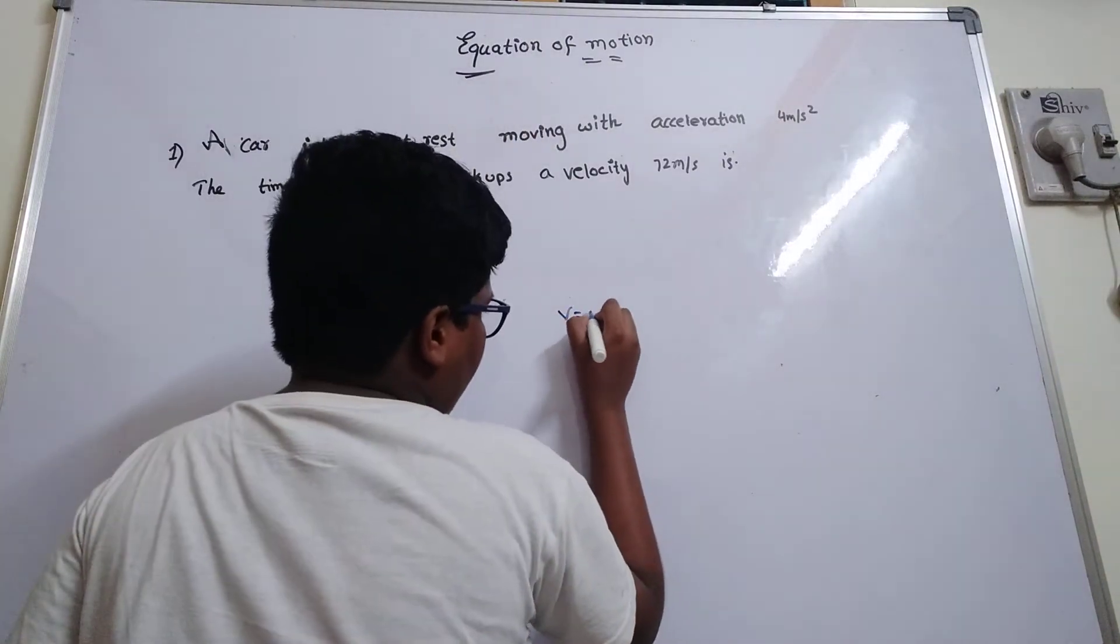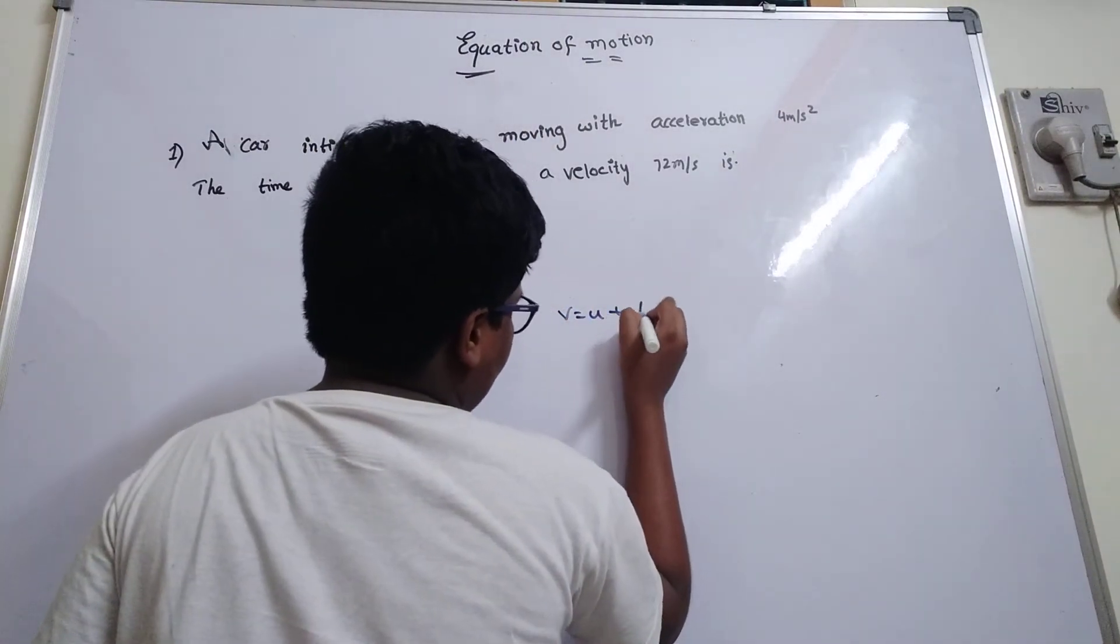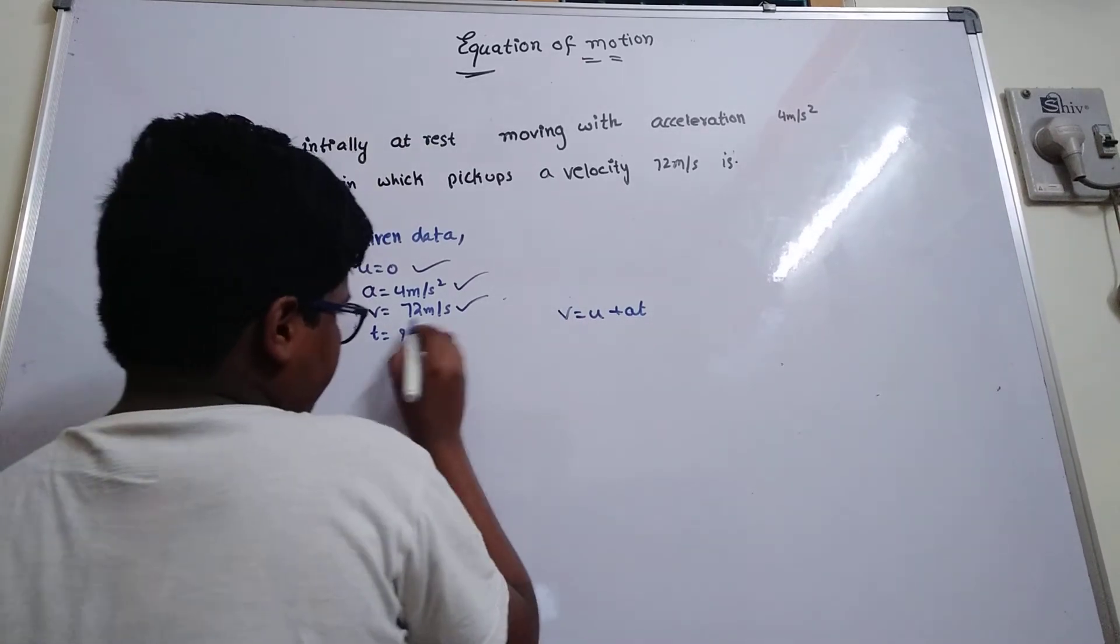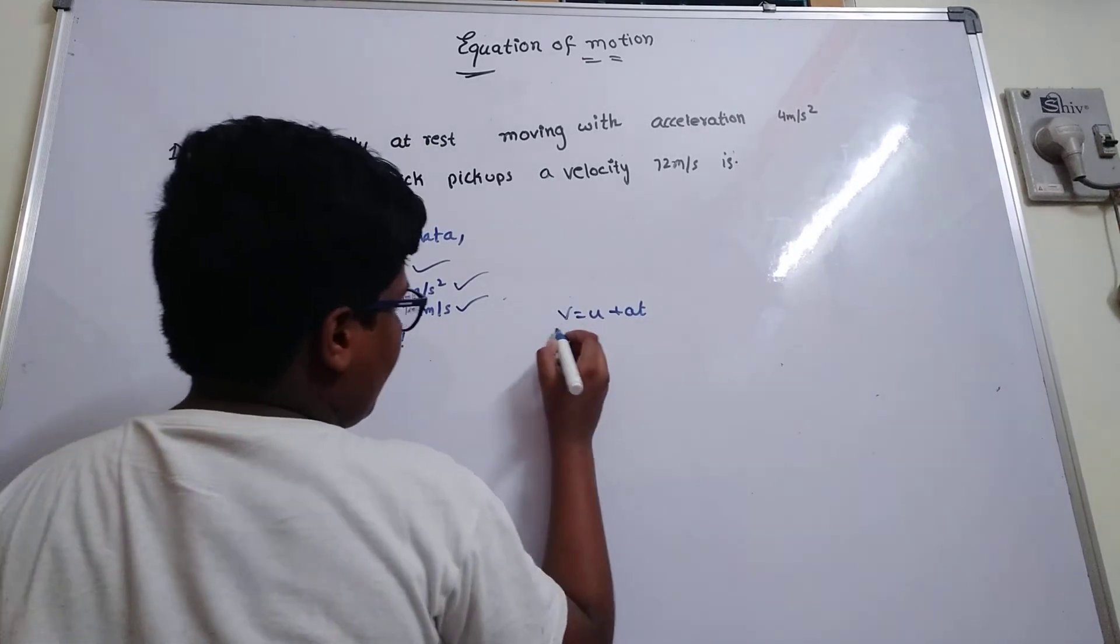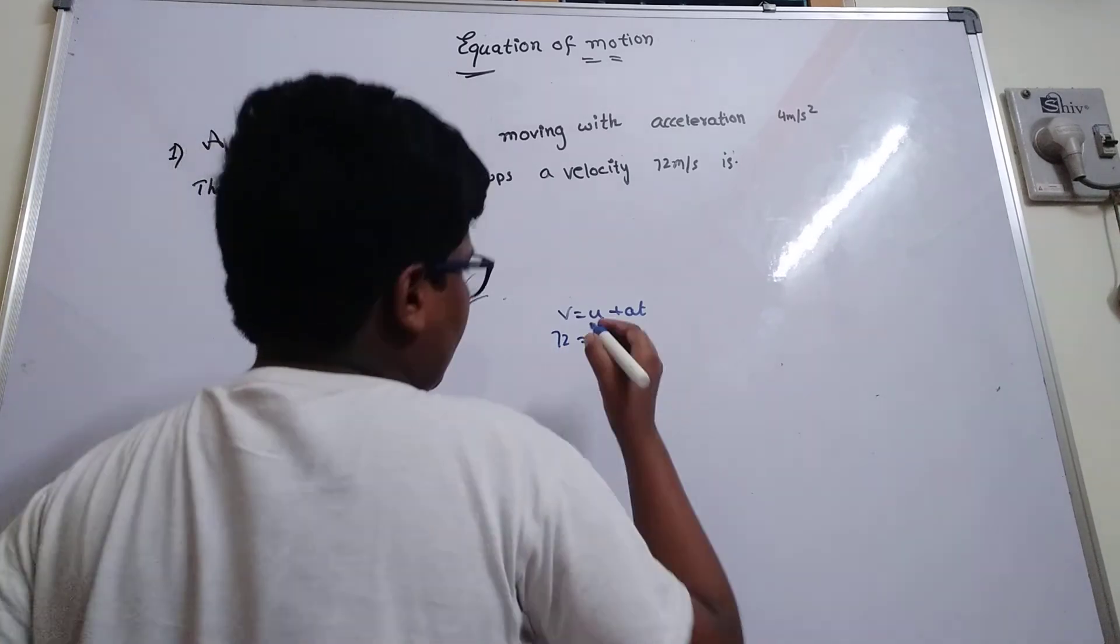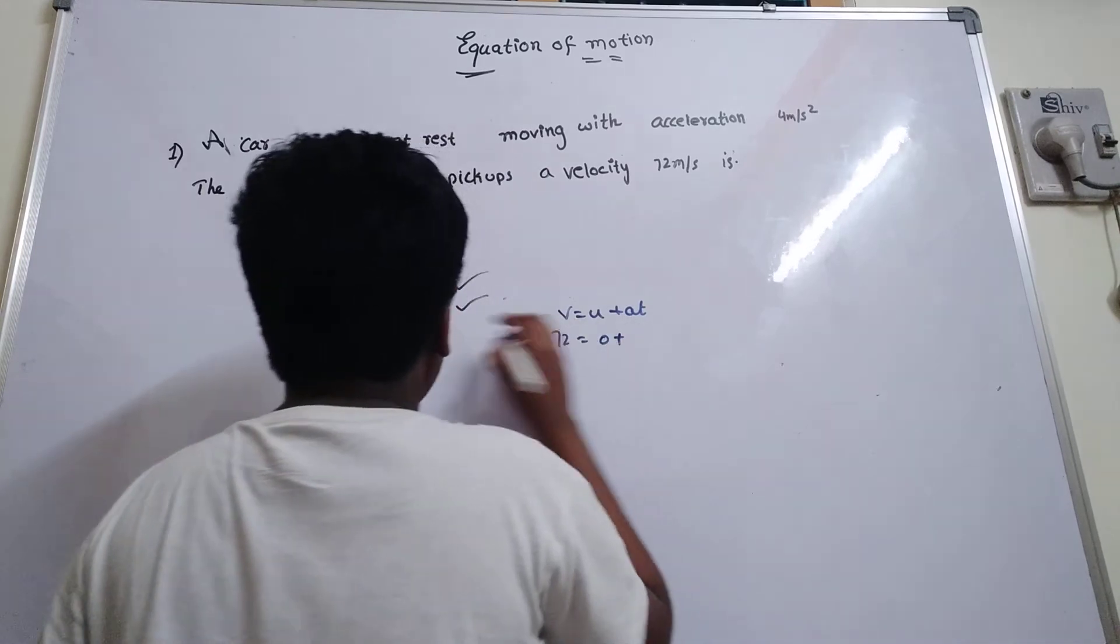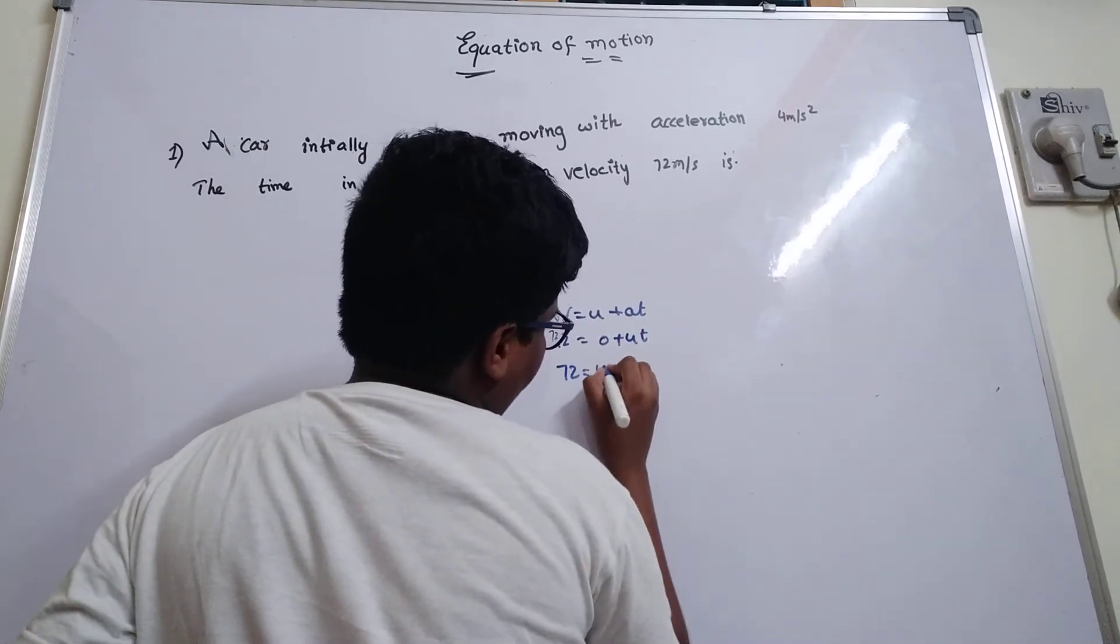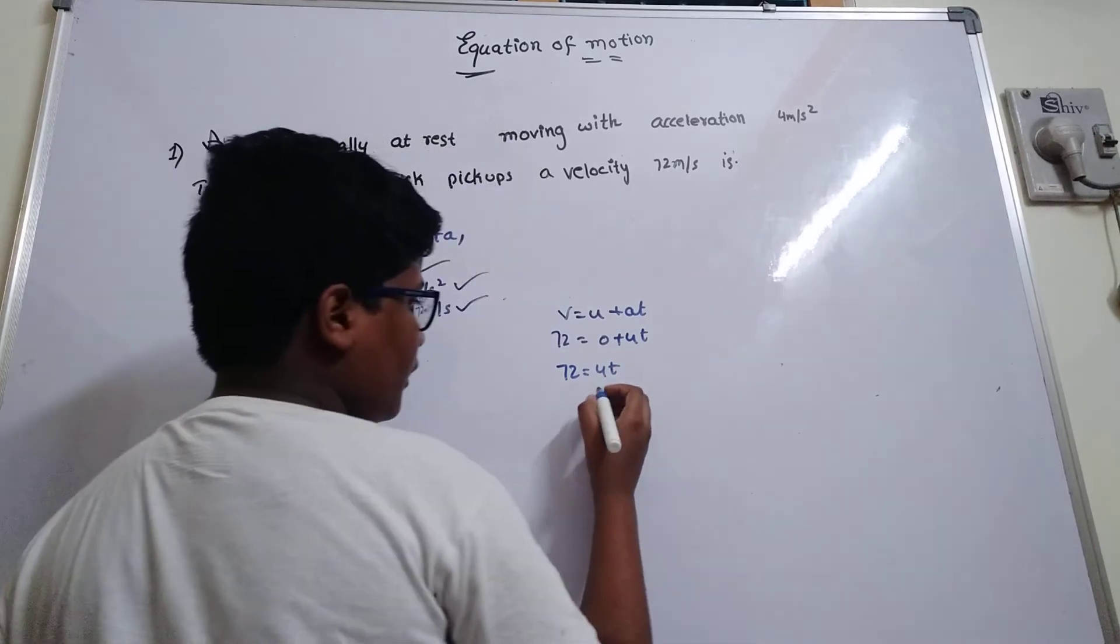V equals to U plus A T. Substitute the values. What is the V? 72 equals to U how much? 0 plus 4 T. 72 equals to 4 T. Then,